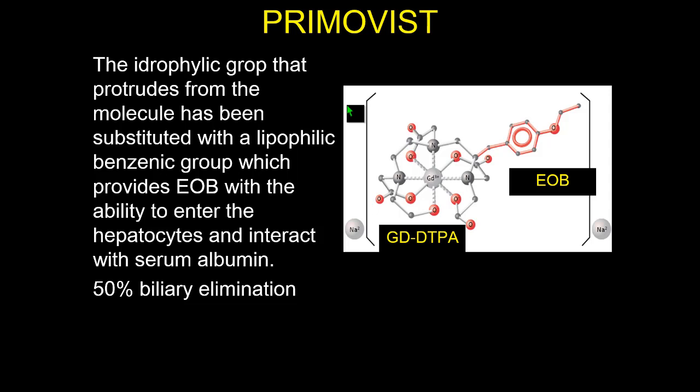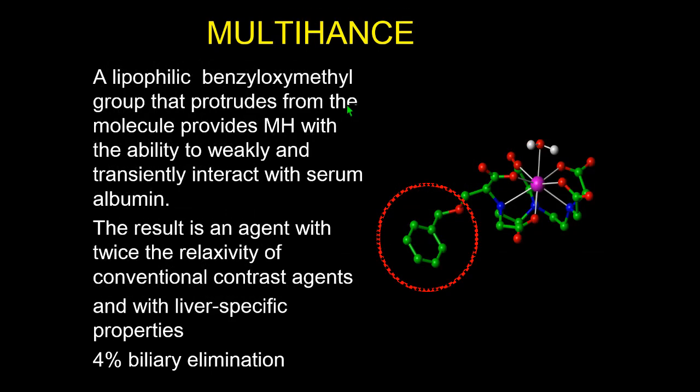There are significant differences between EOB and Multihance. With EOB, we have up to 50% of biliary elimination, so it's a highly liver-specific contrast agent. On the contrary, with Multihance, we have only 4% of biliary elimination. However, the advantage of Multihance is that its side branch retains the ability to weakly and transiently interact with serum albumin, resulting in double relaxivity — meaning very high signal intensity.